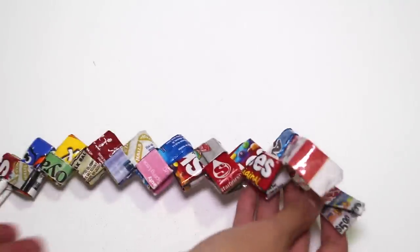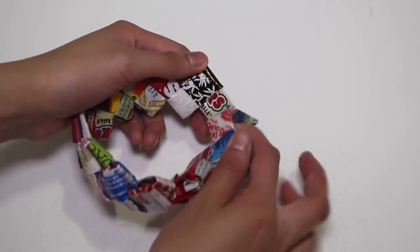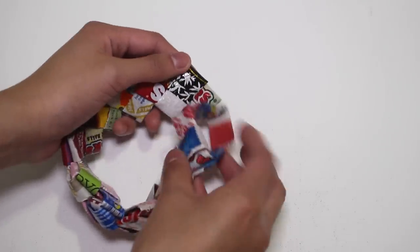To join the ends of the links, take out two flaps on the last link and fold it inward through the link on the other end.